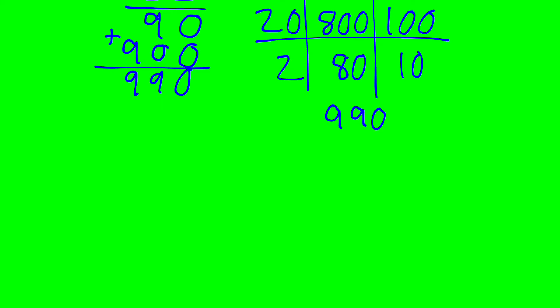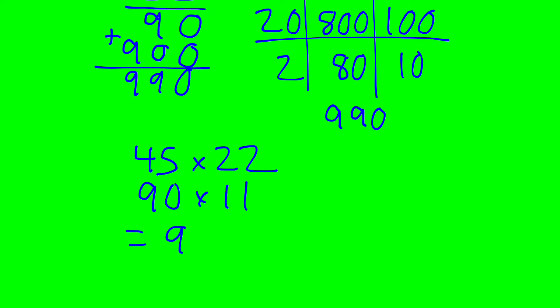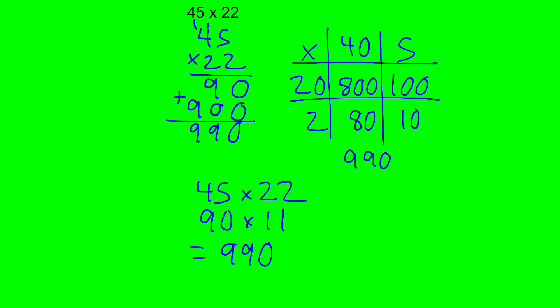We also talked about something called halving and doubling. So 45 times 22 — you could double the 45 and make it 90, you could halve the 22 and make it 11, and 90 times 11 is 99, add on that extra zero for 990. Now those are all excellent methods for multiplication.